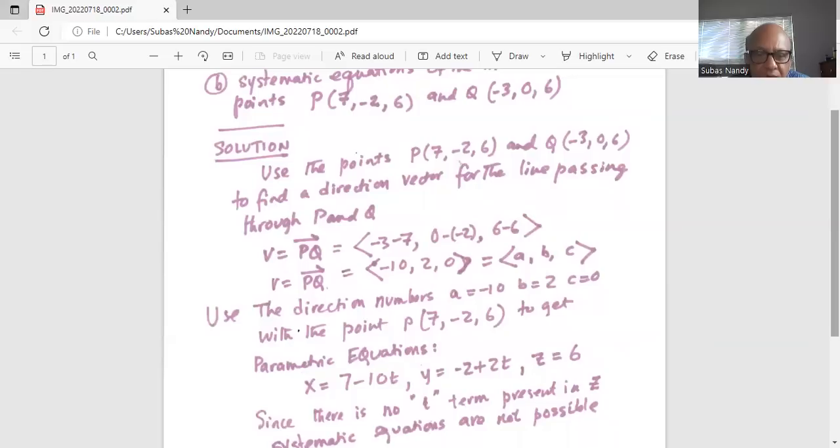y is y1 plus B t. y1 is minus 2, and directional number B is plus 2, so minus 2 plus 2 t.